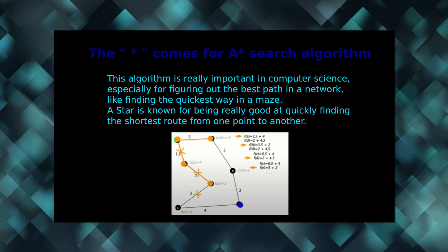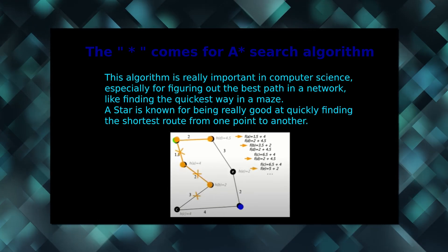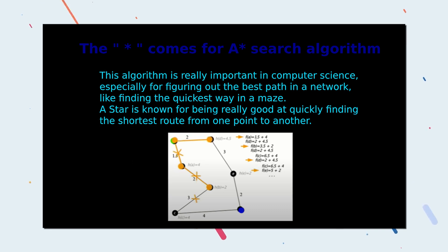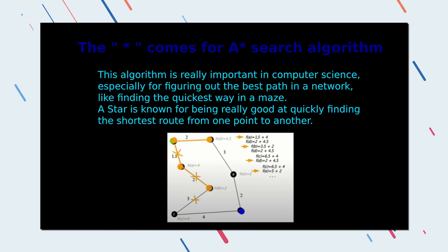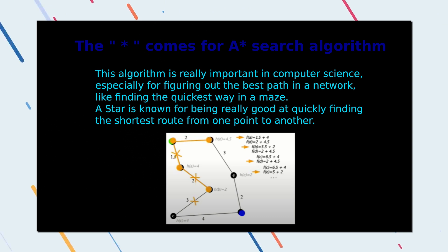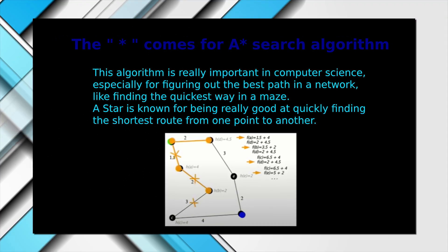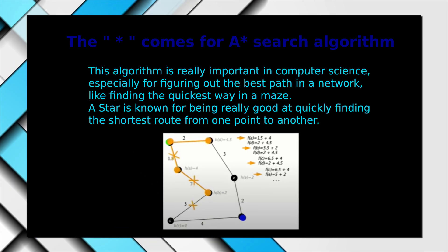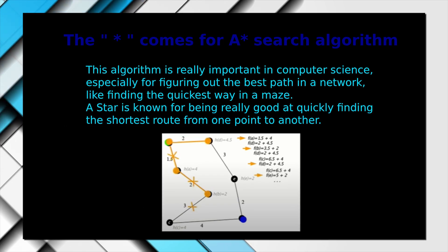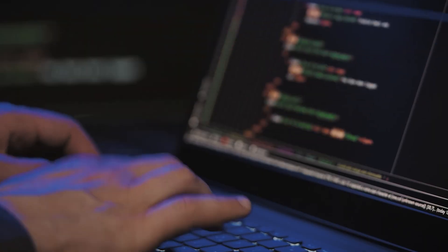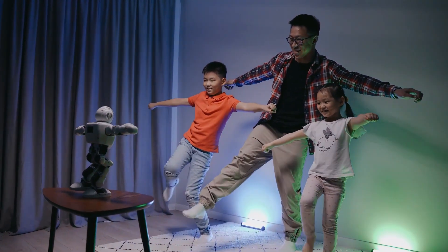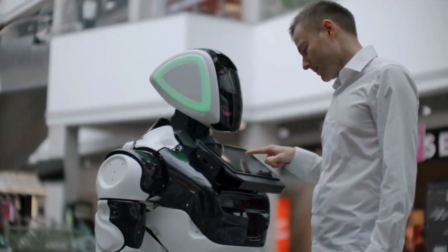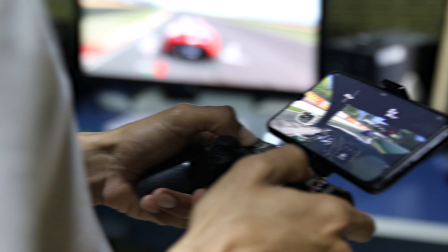Now let's look at the 'star' part of QSTAR, which refers to the A* search algorithm. This algorithm is really important in computer science, especially for figuring out the best path in a network — like finding the quickest way in a maze. A* is known for being really good at quickly finding the shortest route from one point to another. It's kind of like a super smart GPS system that can figure out the fastest way to get somewhere, even in places it's never been before.